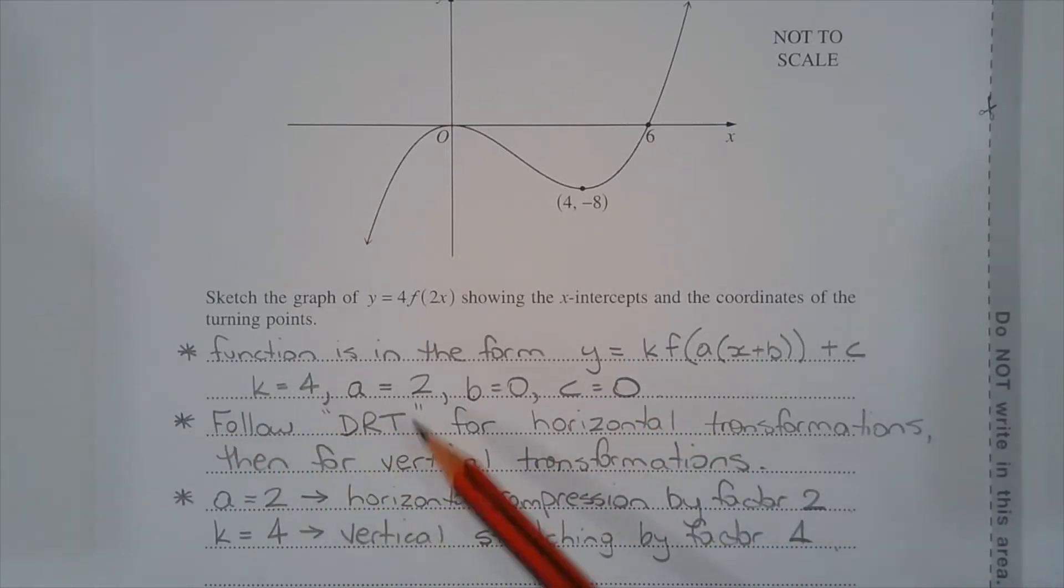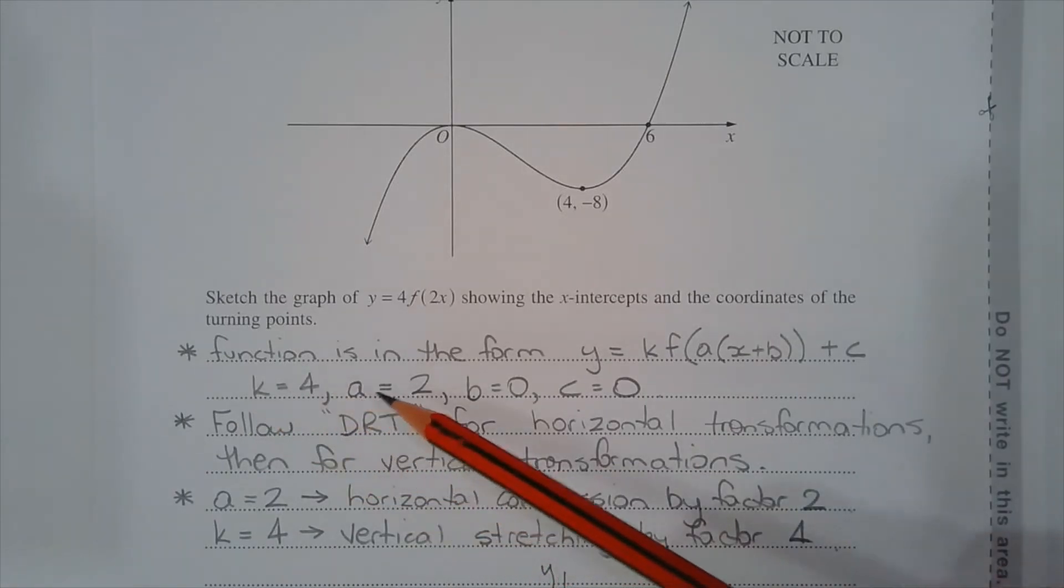And given that k and a are both positive, there's no reflections either. Now k equals 4 and a equals 2 means that there's a vertical dilation and there's a horizontal dilation.